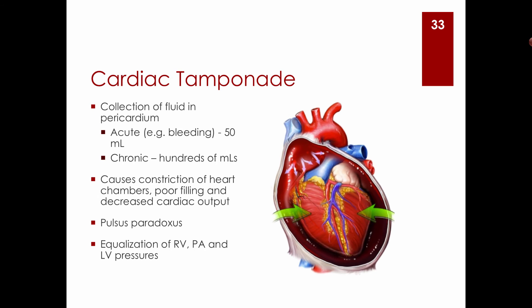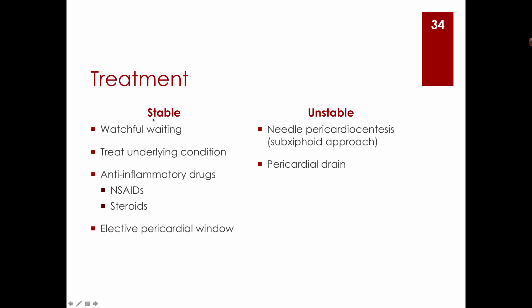Pulsus paradoxus is a physical finding associated with tamponade: normally a deep breath slightly raises blood pressure, but with pulsus paradoxus, blood pressure falls during inspiration. In ICU patients with a Swan-Ganz catheter, tamponade is identified by equalization of right ventricular, pulmonary artery, and left ventricular pressures — a dangerous finding.